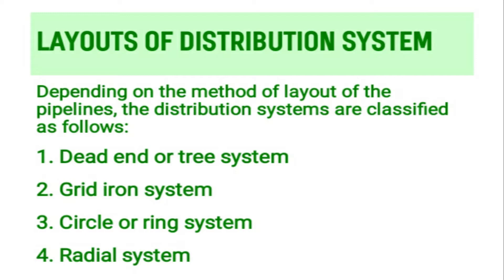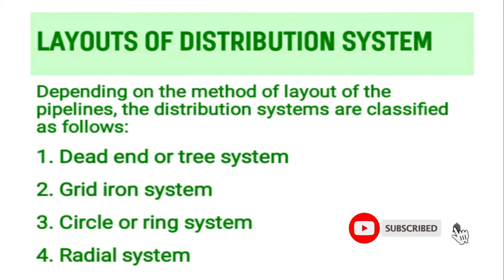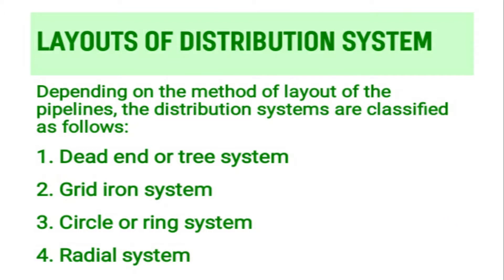The distribution systems are classified into four types: dead end or tree system, grid-iron system, circle or ring system, and radial system. We will study these four systems in detail.